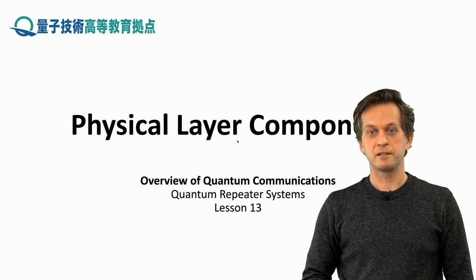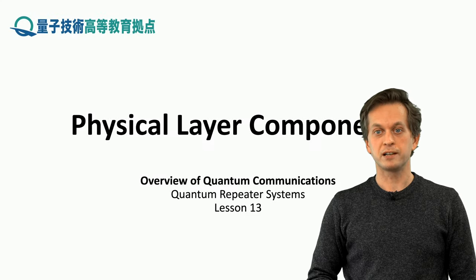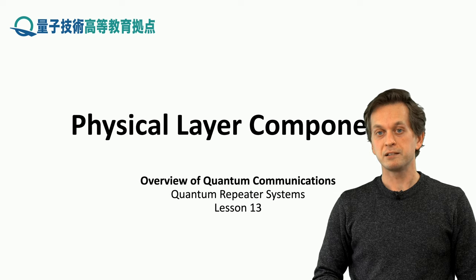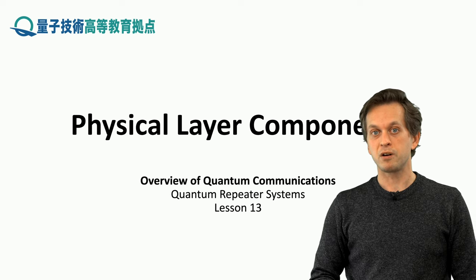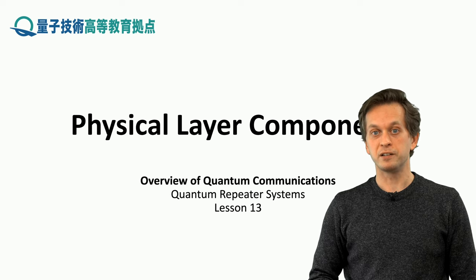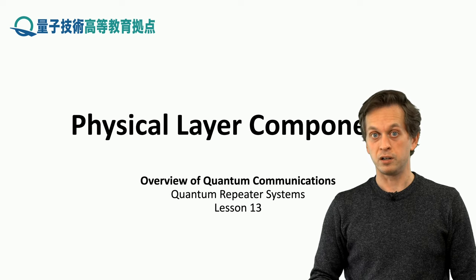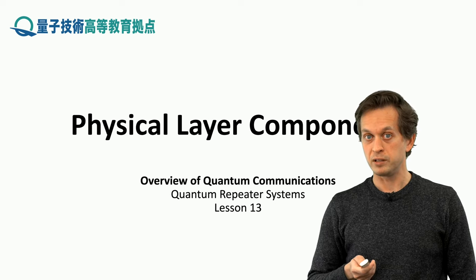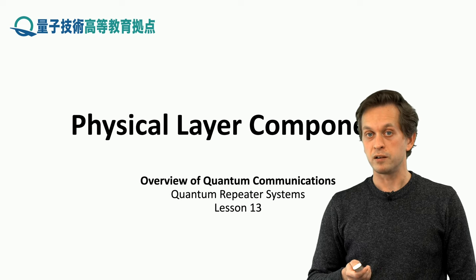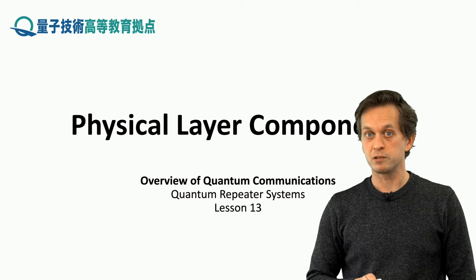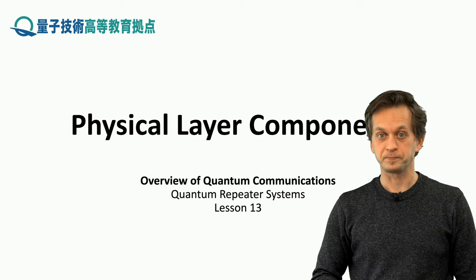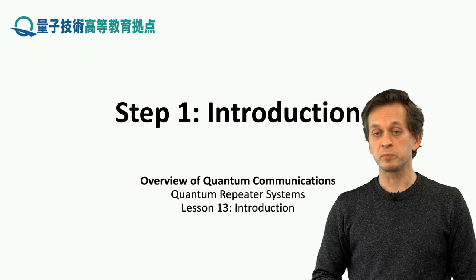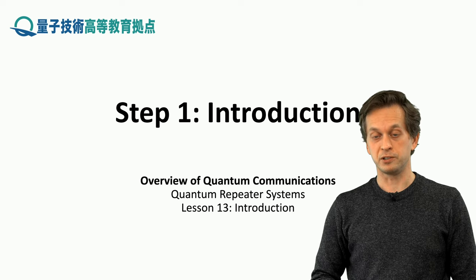Hi and welcome to lesson 13 on physical layer components. In lesson 12 you saw the basics of a quantum repeater and how it can distribute entanglement over long distances. In here we will go a little bit deeper and see how each individual physical component of a quantum repeater works. We will begin with step 1, the introduction.